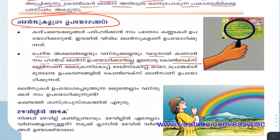This is a convex lens. The small lens is convex. Telescope, camera, projector — this is a convex lens. Microscope, telescope, camera, projector — this is a convex lens.